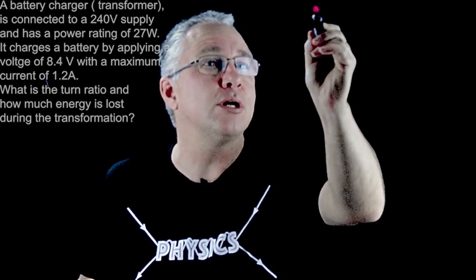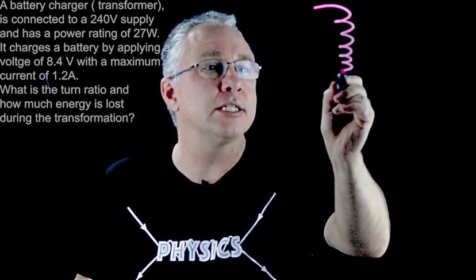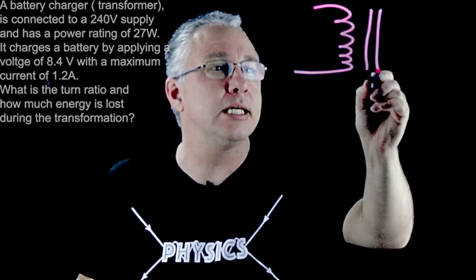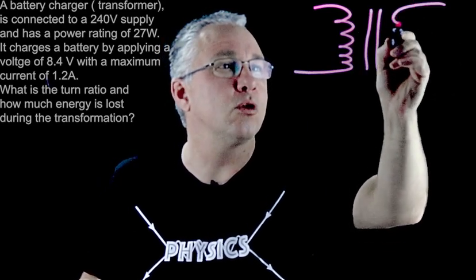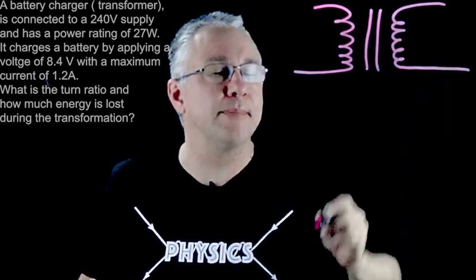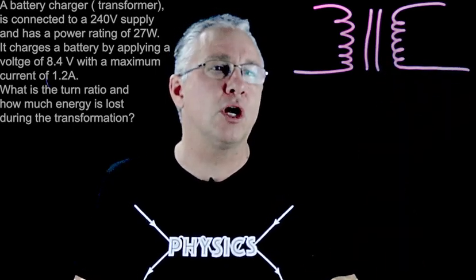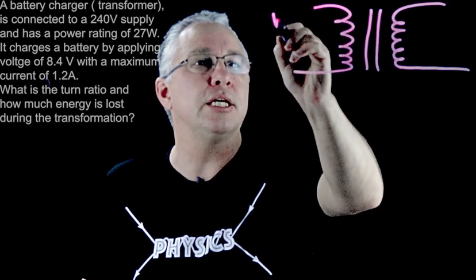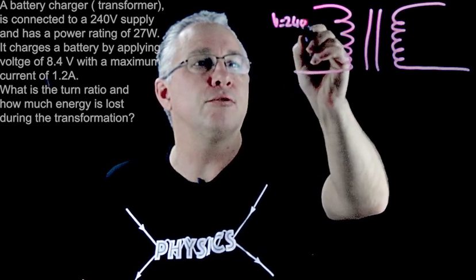Now the way we often draw a transformer is a bit like a coil like this on one side, we have two lines here and then we have our second coil over here. It doesn't really matter, it's just a diagram, but we're told that we have an input voltage here of 240 volts.